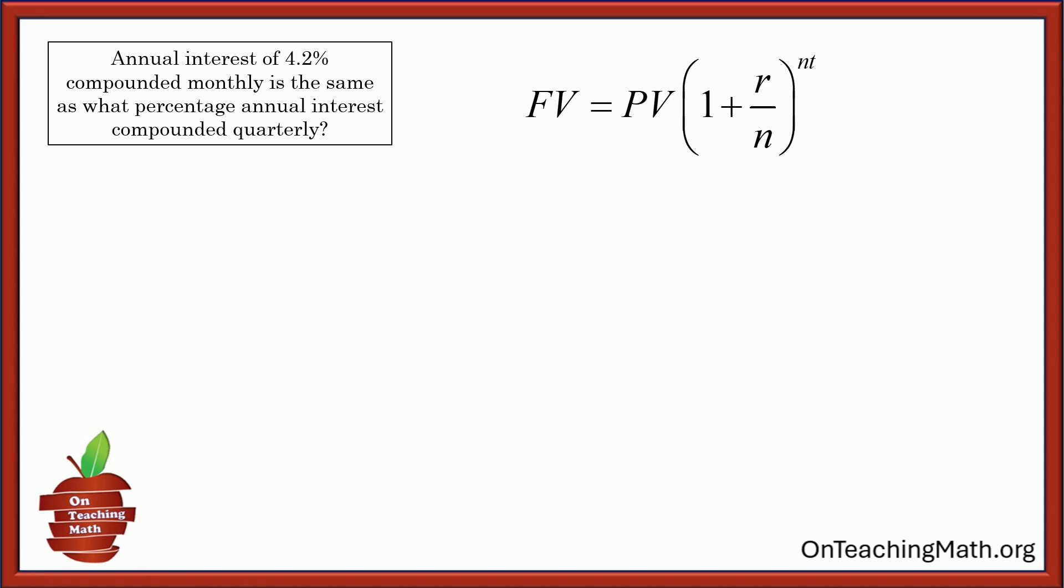So future value is equal to the principal or the present value, however you want to say it, PV, either way, principal, present value, times 1 plus R divided by N to the power of NT. All right. So let's talk about this. FV is future value. PV is present value or principal. R is the interest rate. You got to write that as a decimal, not a percentage.